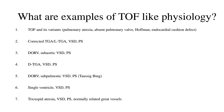This brings us to the question: what are the examples of TOF-like physiology? Typical Tetralogy of Fallot is the prototype of TOF-like physiology and is associated with variants like pulmonary atresia, absent pulmonary valve, the Hoffman variant, and TOF associated with endocardial cushion defect. Those variants won't be covered today. Apart from TOF and its variants, there are six other different examples which exhibit TOF-like physiology, arranged in a specific order which will become clear subsequently.